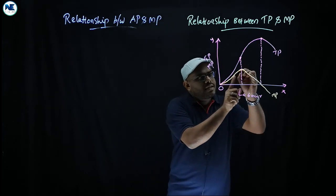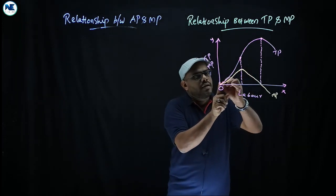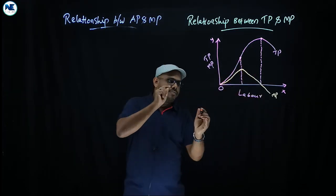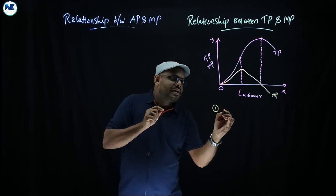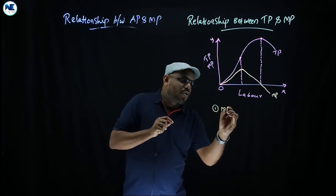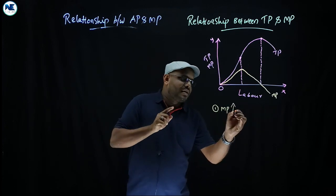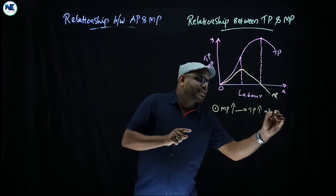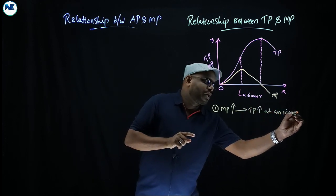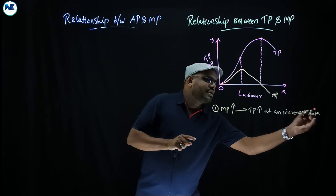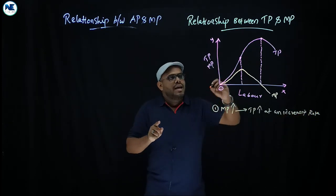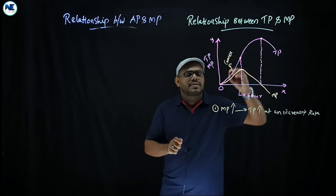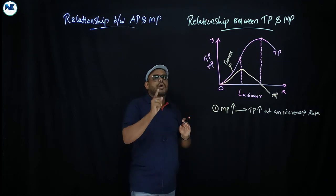Now here is the first relationship. When marginal product is increasing, total product is increasing at an increasing rate. The shape of the total product in this phase is convex to the origin.